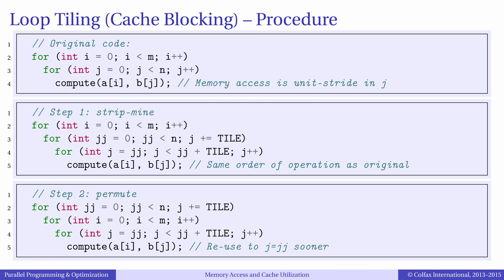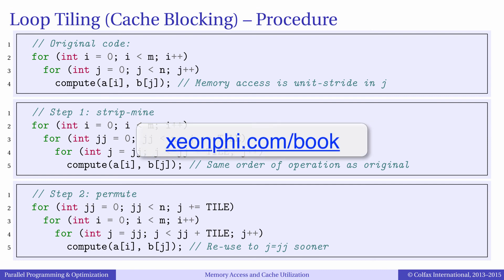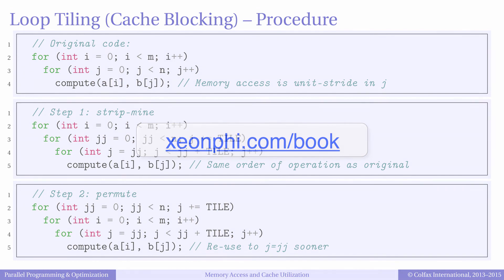Besides cache blocking, there are several other programming techniques to improve temporal locality of memory access. They include another form of loop tiling called unroll and jam, which is tiling for memory registers, cache oblivious recursion, and also loop fusion. They are discussed in more detail in our book, and one of them, cache oblivious recursion, will be illustrated in the next module.